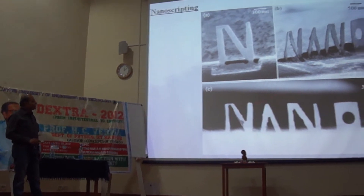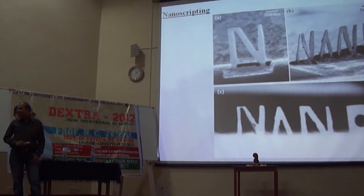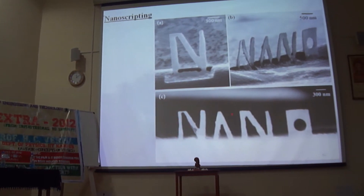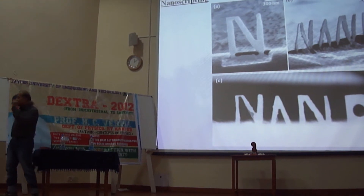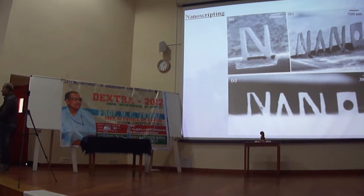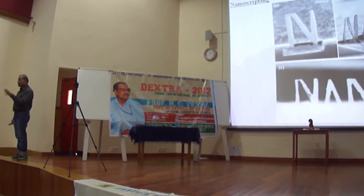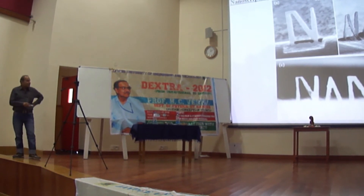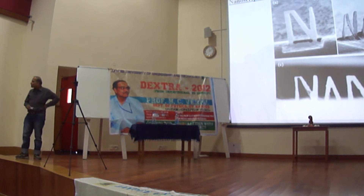This word 'nano' is written only by film bending. All these are metallic features — all these are cantilevers. Each one is separately a cantilever. The main thing is control. If something has happened and you don't have control, then you cannot make an application out of it. But if you have control, then you can make applications. So in a very controlled manner, he has bent all these cantilevers and made this example.